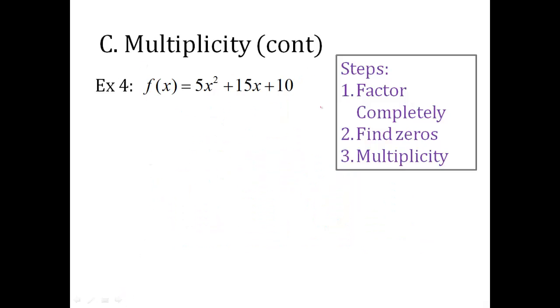Let's try another one of these. Factor completely. What's the greatest common factor here? It's a 5. Take that out. You get x squared plus 3x plus 2. This continues to factor. You get x plus 2, x plus 1, and then there's that 5.